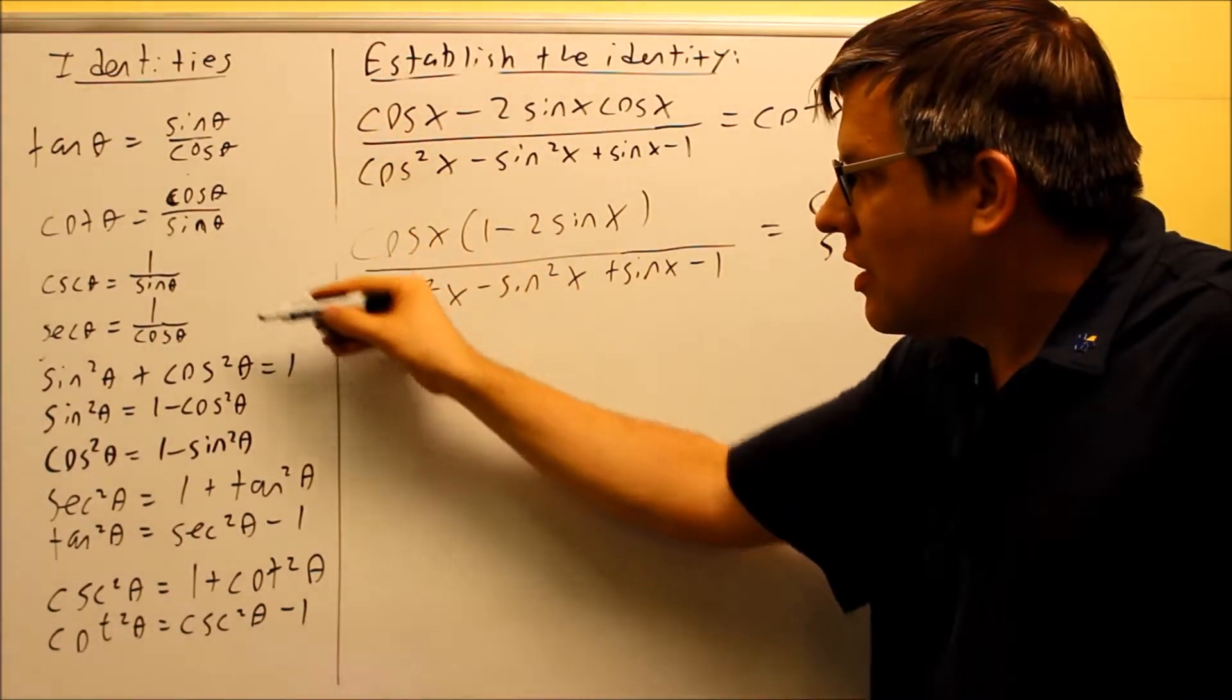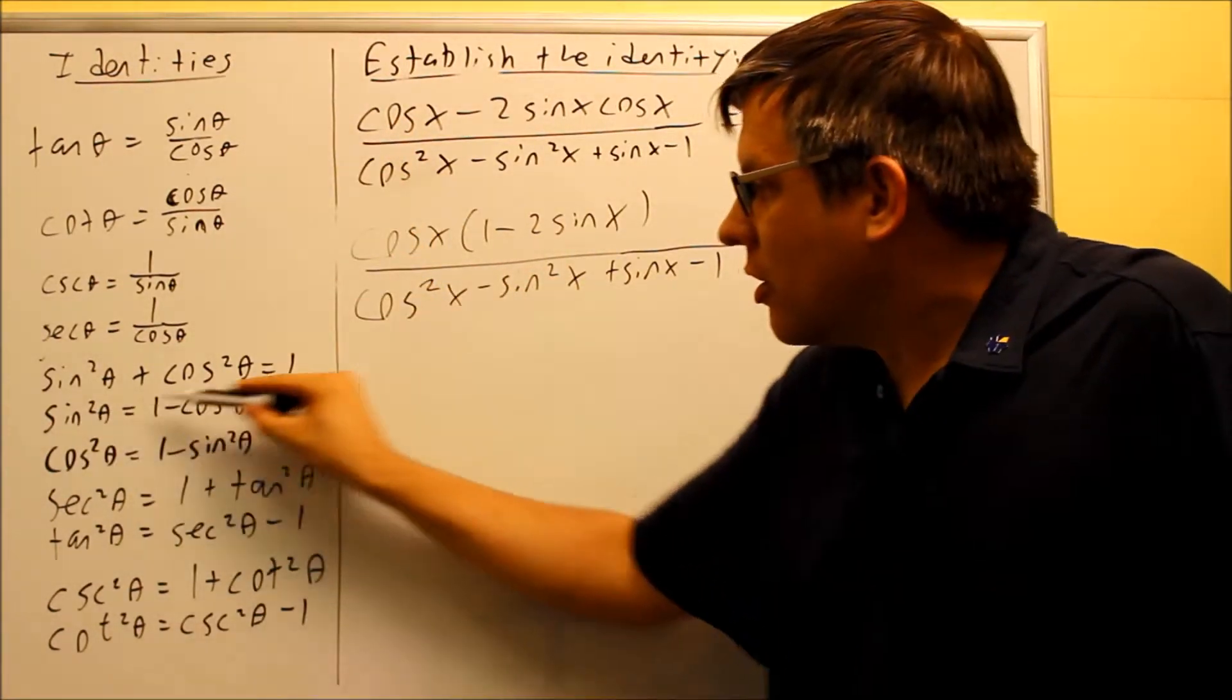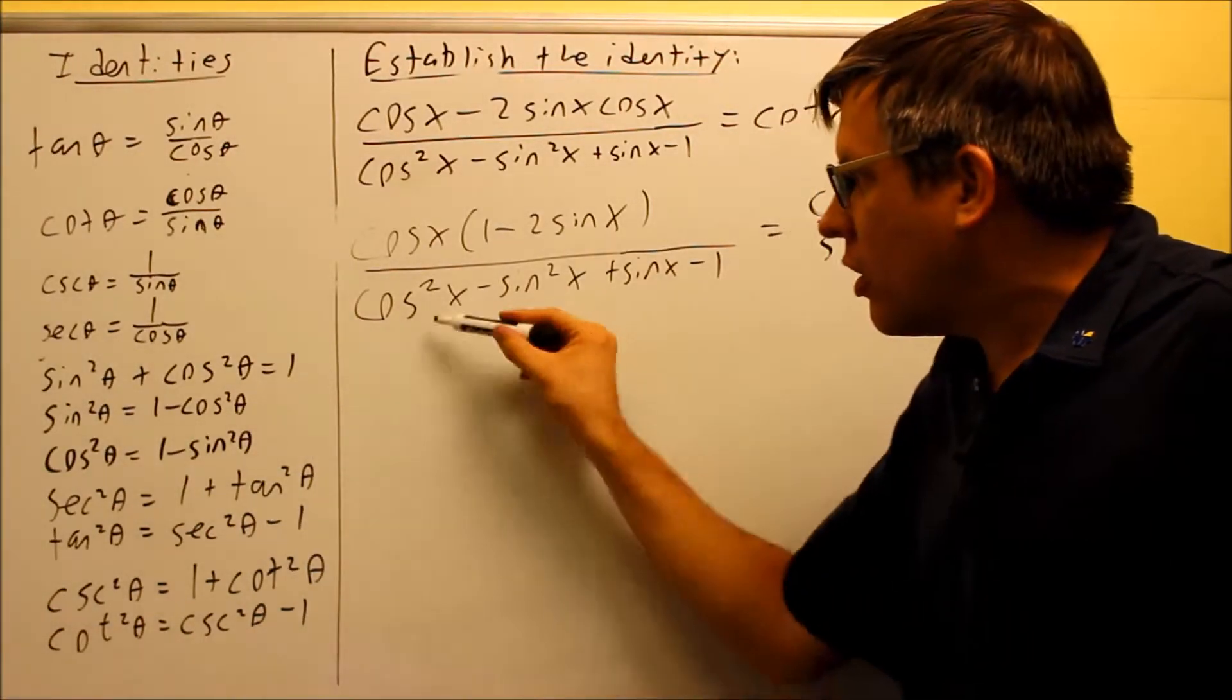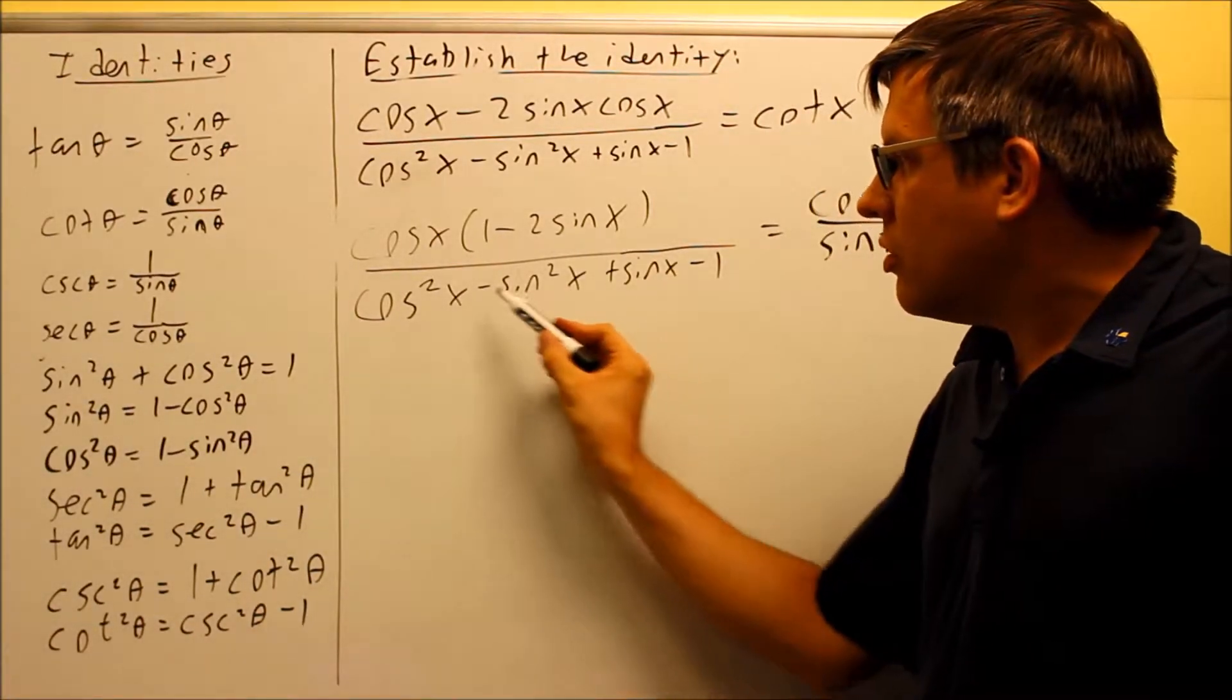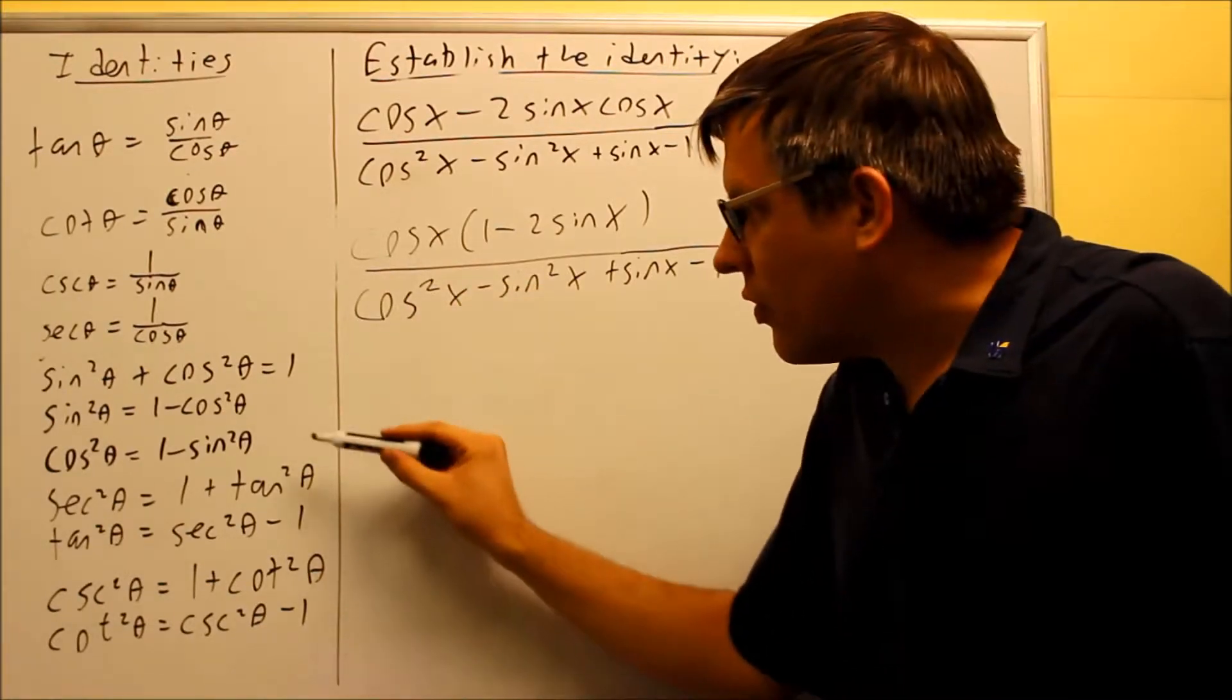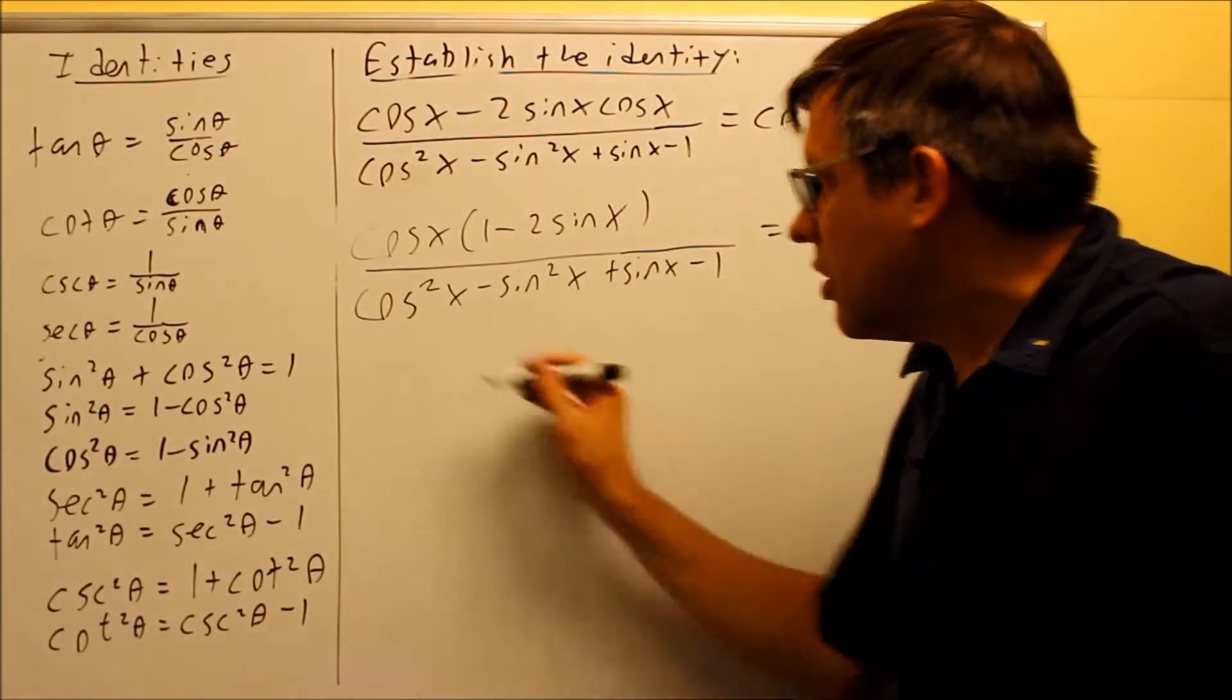When I look through my identities, I find this one right here. This one says that cosine squared is equal to one minus sine squared. That's the identity that I want to use right in here. So what I'll do is I'm going to replace the cosine squared with the identity one minus sine squared. That's what I'll do next here.